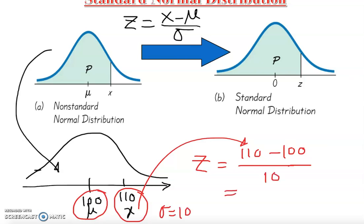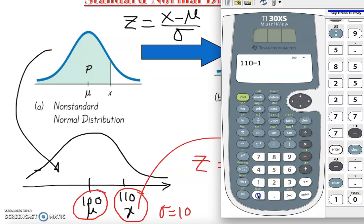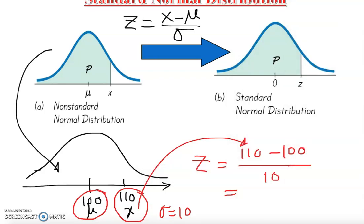Once I divide by 10, I can calculate: z = (110 − 100) ÷ 10. That gives z = 1. So the z-score is 1.00 — we round to two decimal places by default. My z-score is 1.00, and that means this data value is one standard deviation above the mean.